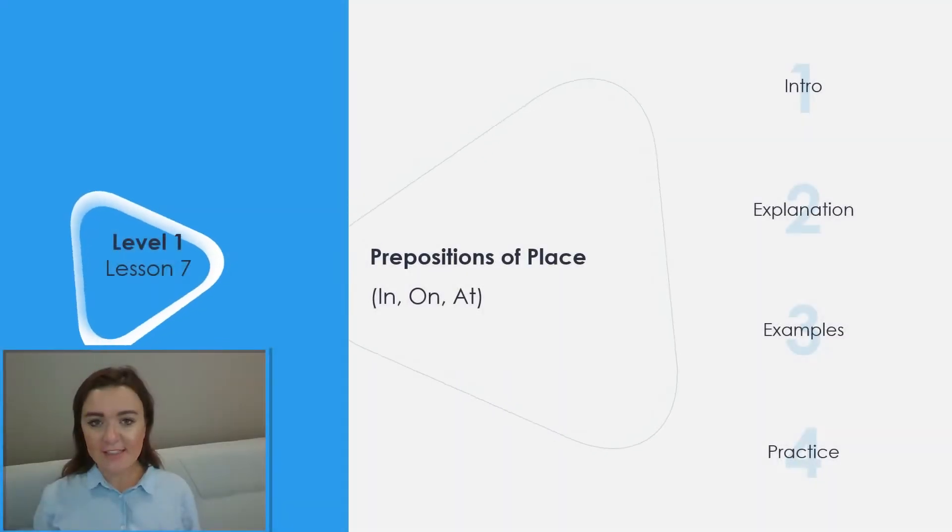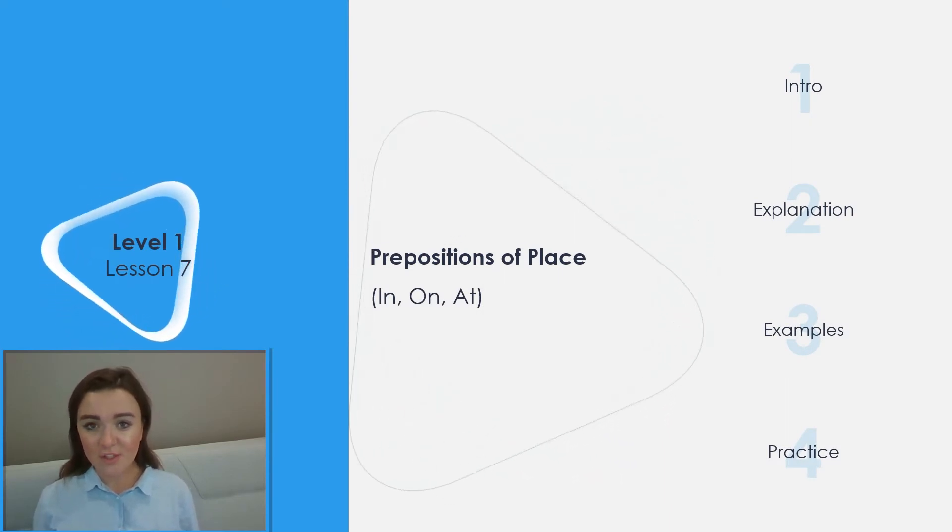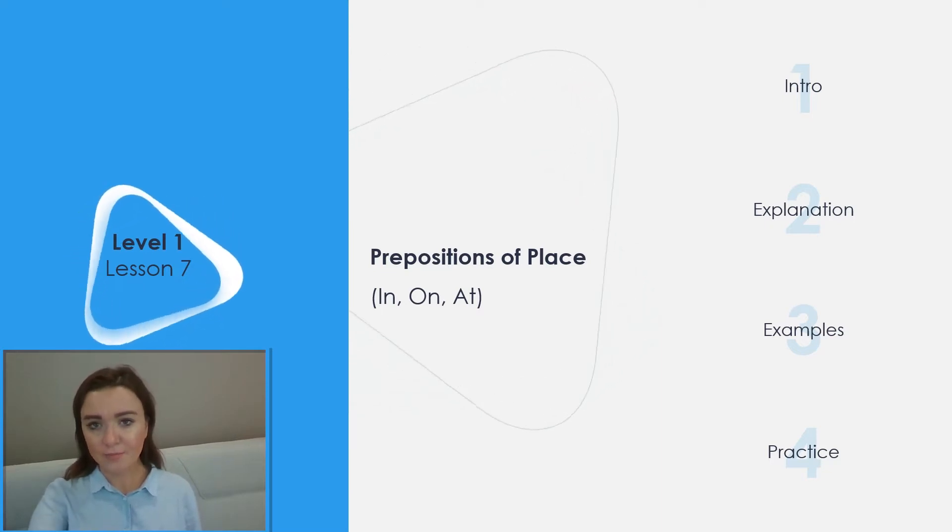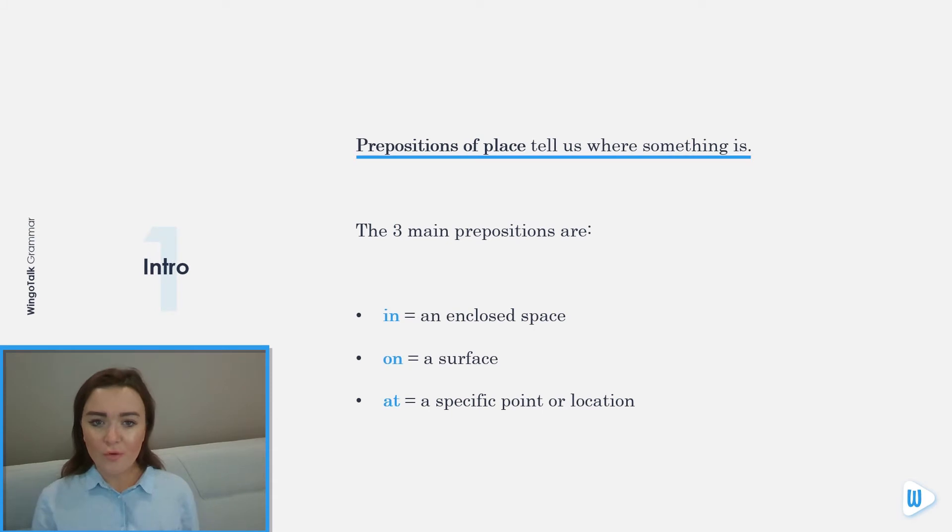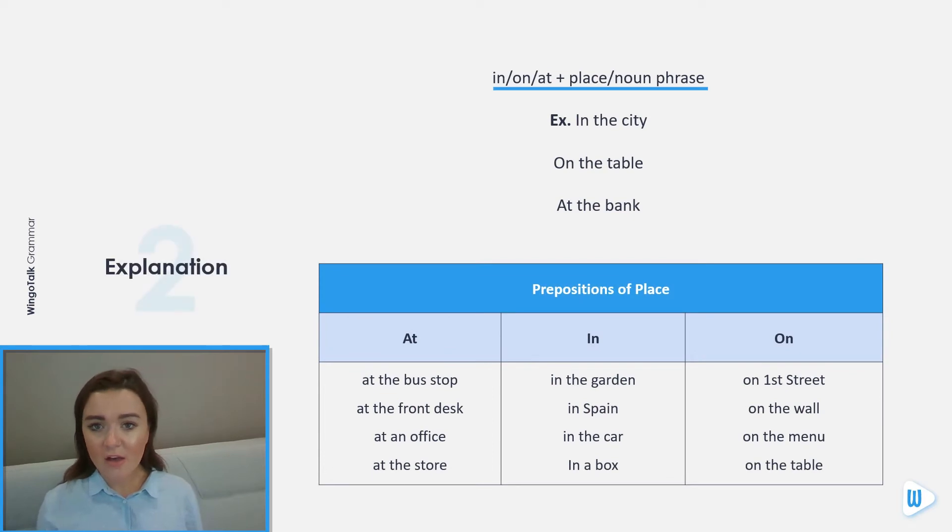Level one, lesson seven: prepositions of place - in, on, or at. Prepositions of place tell us where something is. The three main prepositions are: in, an enclosed space; on, a surface; or at, a specific point or location.